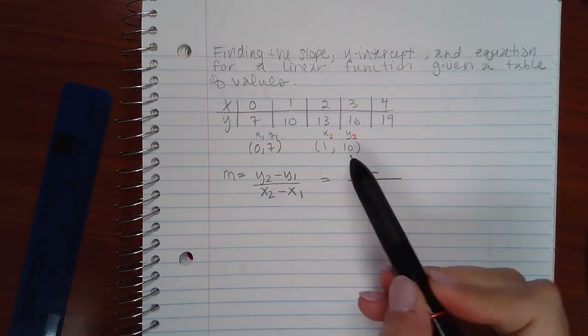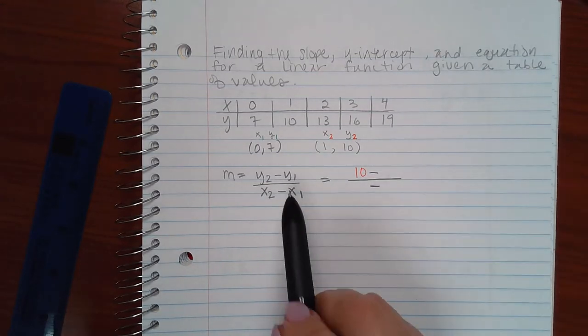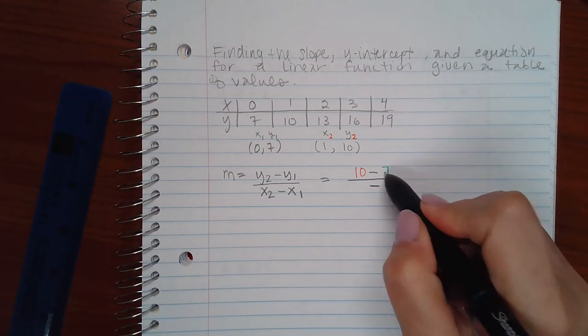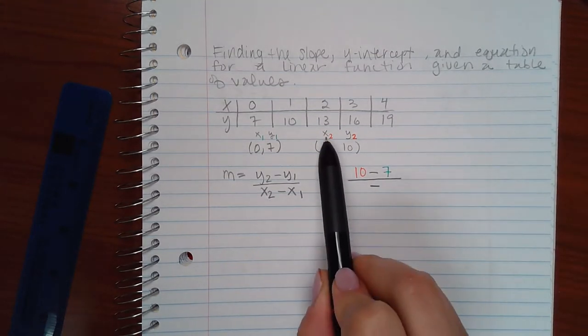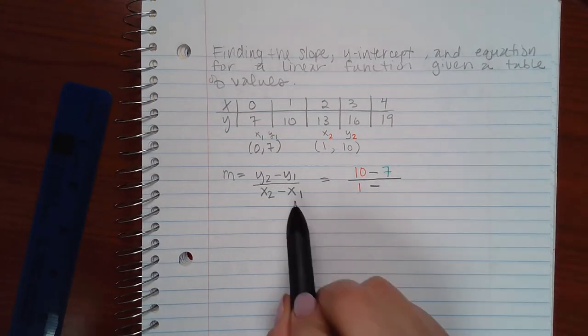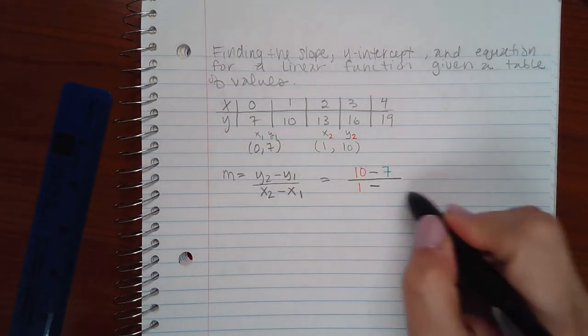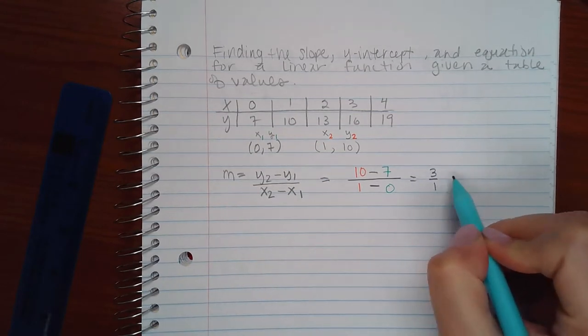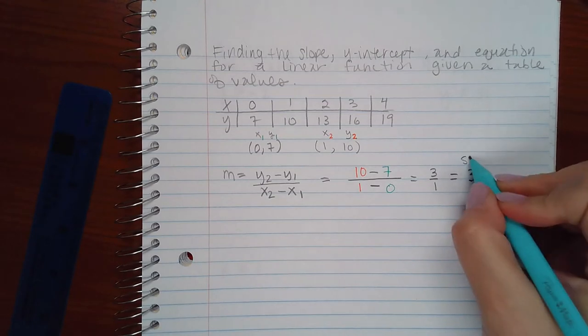y2, however, is this value here, ten. y1 is the first y value, which is seven. x2 is the x value of the second coordinate, which is one. And x1 is the x value of the first coordinate, which is zero. So when I compute this, I end up with three over one, which is just three. This is the slope.